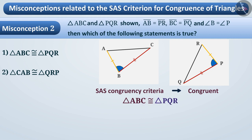Children find it easy to write the name of the triangle in alphabetical order. So they show the congruency of these two triangles by writing triangle ABC is congruent to triangle PQR. But this is a wrong answer — the children have not taken care of the correspondence.